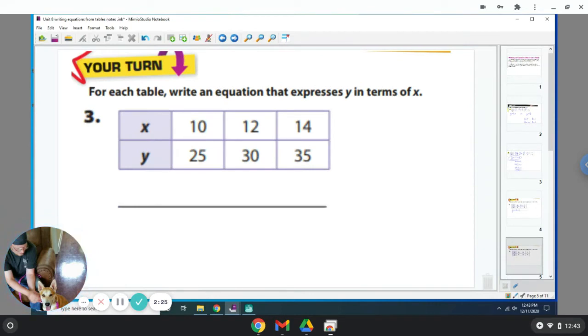All right, try this one. So when x is 10, y is 25. When x is 12, y is 30. And then when x is 14, y is 35. So I can tell you right now, this is not a multiplicative. This is not adding anything because 10 plus 15 is 25. Well, if I do 12 plus 15, that's 27. That is not equal to 30. So it's not correct. So this should be multiplicative.